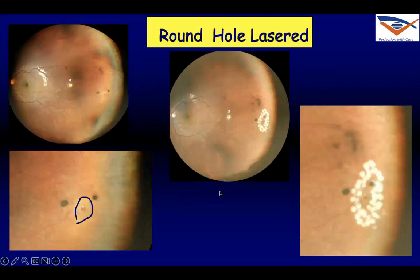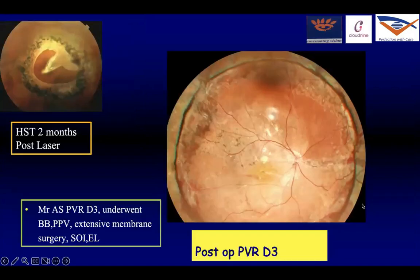This is a patient with an atrophic hole in the temporal periphery, lasered by LIO with two rows, and the patient is doing well. This is a patient who had an advanced retinal detachment with PVR grade D3. The patient was operated; this is status post-vitreoretinal surgery with a silicone-filled eye, where a 360-degree laser has been done. You can see the buckle effect, and the patient did well.